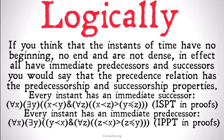Logically, every instant has an immediate successor: for all x, there exists some y, such that x is before y, and for all z, if x is before z, then y is before or equal to z. And every instant has an immediate predecessor: for all x, there exists some y, such that x is after y, and for all z, if x is after z, that implies that y is after or the same as z.